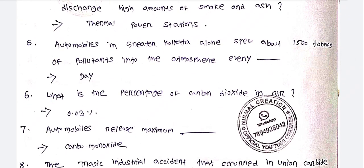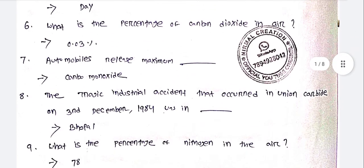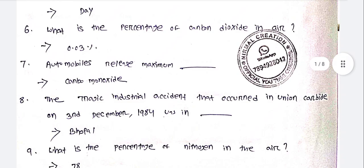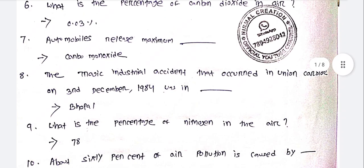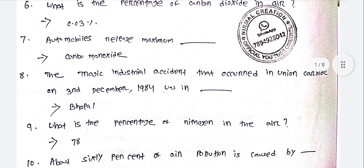Automobiles in Greater Kolkata spew about 1500 tons of pollutants into the atmosphere every day. The percentage of carbon dioxide in air is 0.03%. Automobiles release the maximum gas, carbon monoxide.